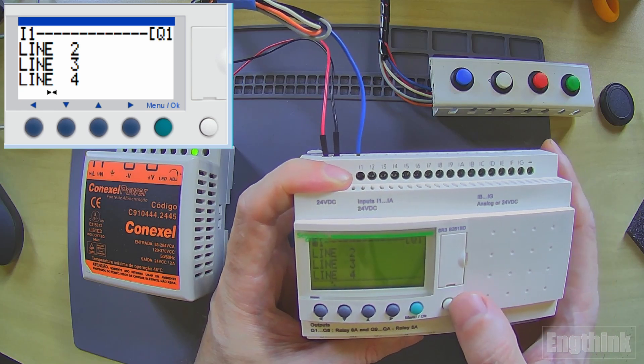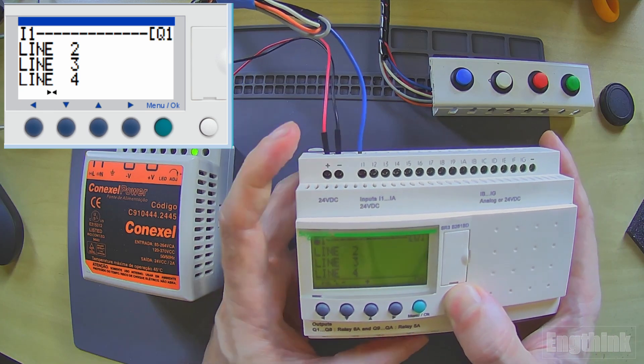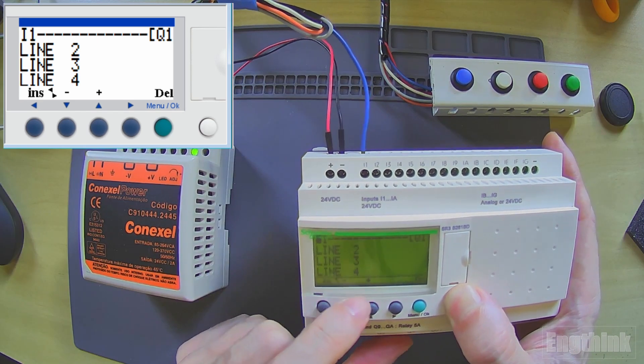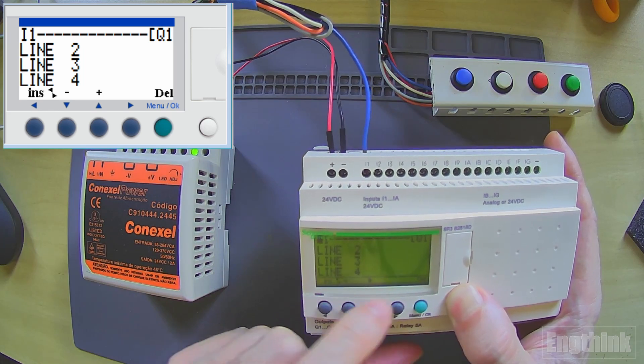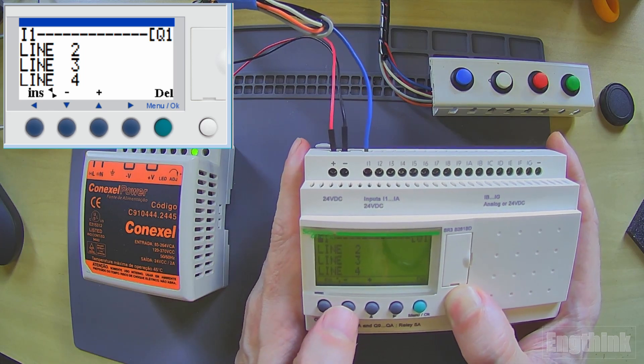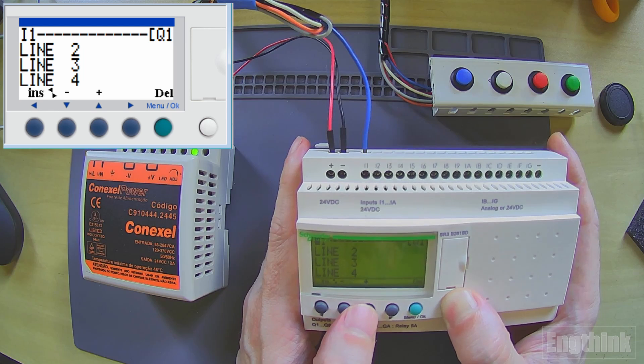To do this, we need to press the white button. Then we have more options at the bottom of the display. We need to navigate between plus and minus.